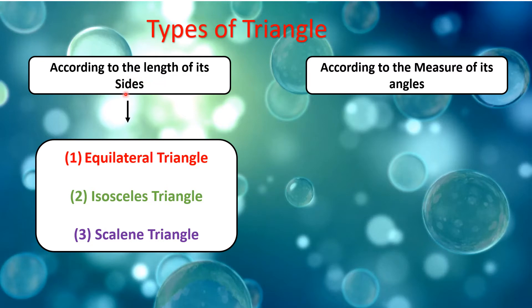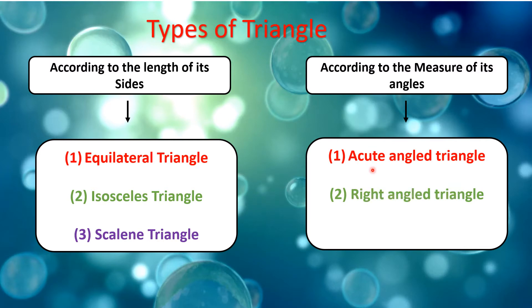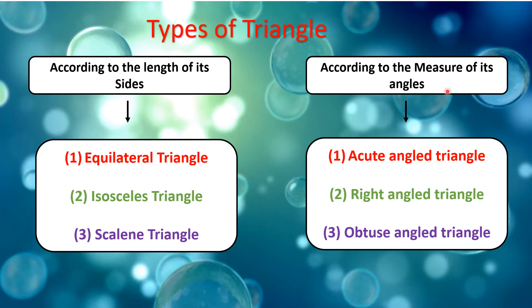According to the length of its sides: equilateral triangle, isosceles triangle, scalene triangle. According to the measure of its angles, there are three types: one, acute-angled triangle; two, right-angled triangle; three, obtuse-angled triangle.